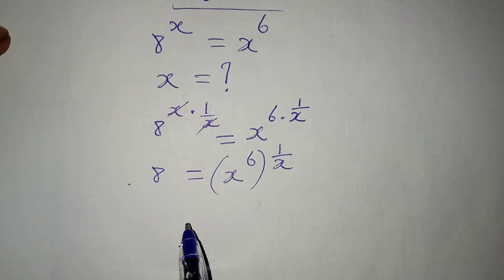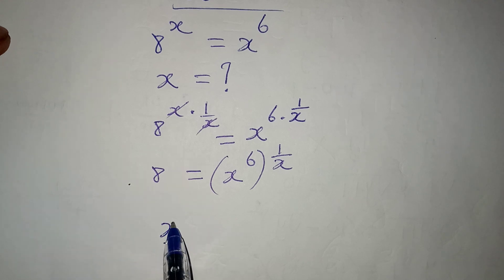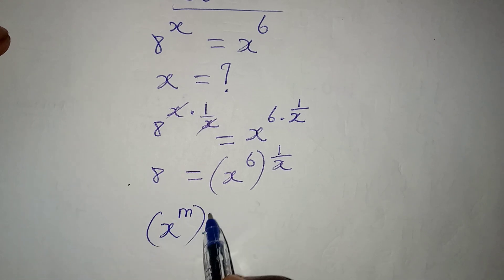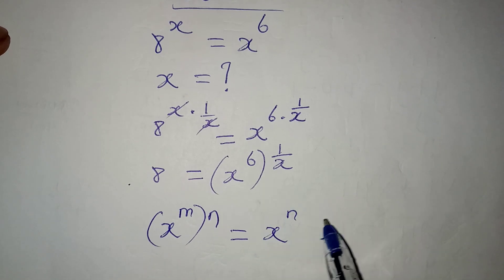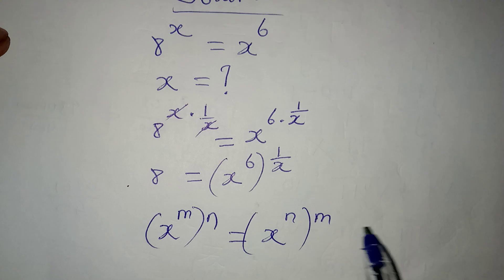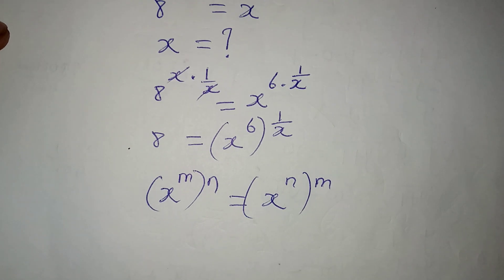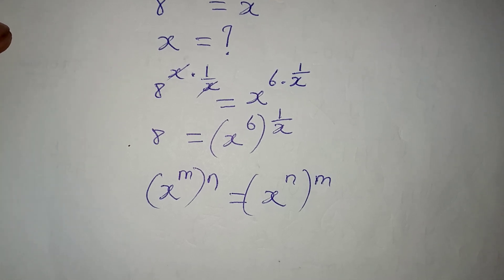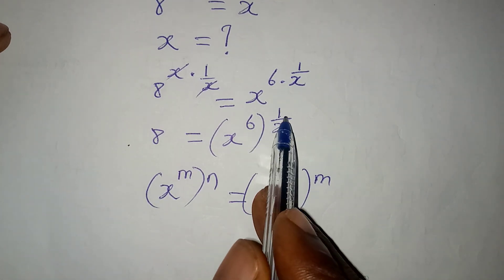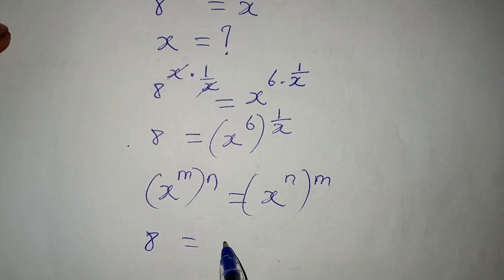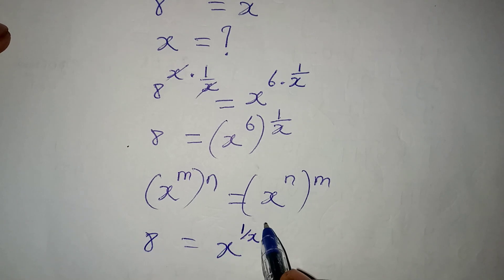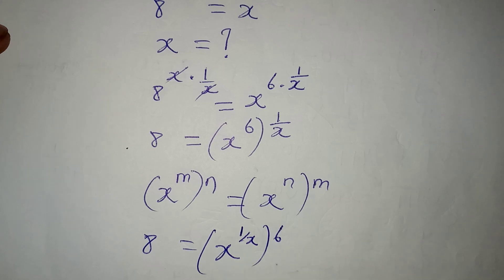Before the next step, remember that if you have x to the power of m to the power of n, it is the same thing as x to the power of n to the power of m. This is because when you are multiplying, the arrangement does not matter. Now I'm going to bring 1 over x inside and take 6 to the other side, so 8 will be equal to x to the power of 1 over x, and now I can take 6 outside.